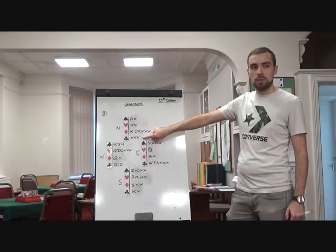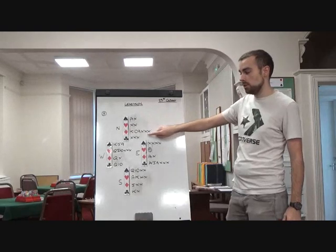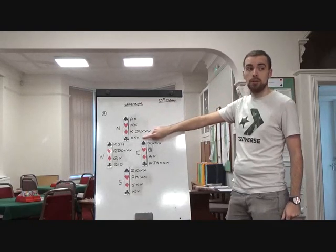We've got question marks in clubs as well. Where's the ace of clubs? We could have 2 or 3 losers there. So it's not looking very pretty. 1 loser, potentially 2 losers, potentially 3 losers. So we could be going a couple off here.